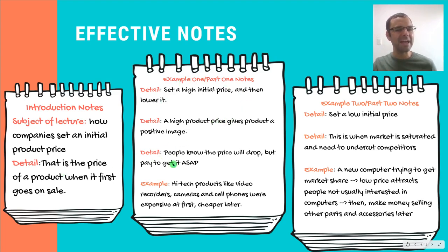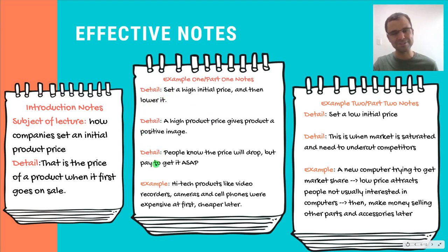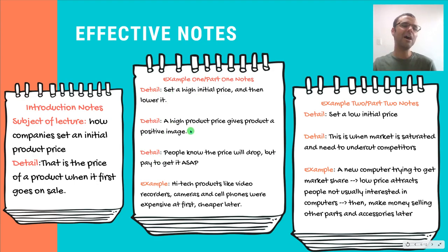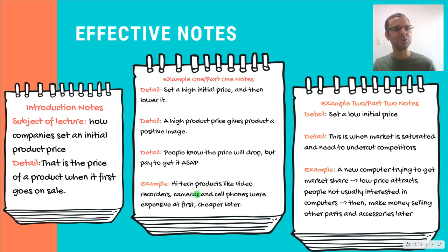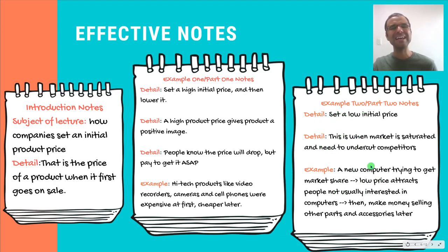Then you want to get as many notes as you can from the first example or the first part. You want to get the details of that example. Here I got that they can set a high initial price and then lower it. A high product price gives the product a positive image. People know the price will drop but then pay to get it right away. And then I got the very specific example they mentioned: high-tech products like video recorders, cameras, and cell phones were expensive at first and cheaper later. Now I won't read all the notes from the second example, but it's pretty much the same thing — getting the details and then the very specific thing they mentioned.